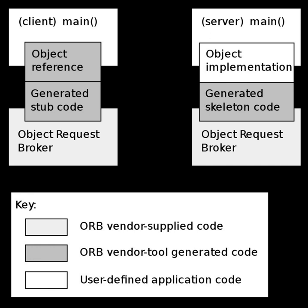CORBA location refers to a stringified object reference for a CORBA object that looks similar to a URL. All CORBA products must support two OMG-defined URLs: corbaloc and corbaname. The purpose of these is to provide a human-readable and editable way to specify a location where an IOR can be obtained. A CORBA product may optionally support HTTP, FTP, and file formats, which provide details of how to download a stringified IOR or recursively download another URL that will eventually provide a stringified IOR. Some ORBs deliver additional proprietary formats.